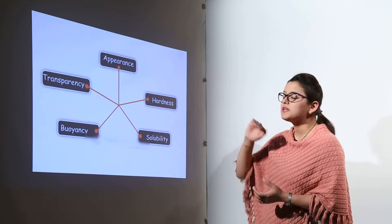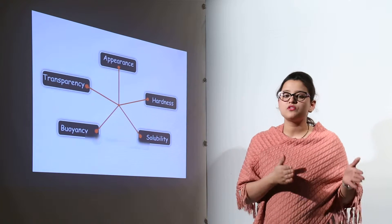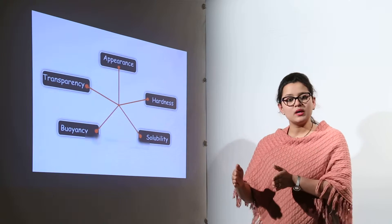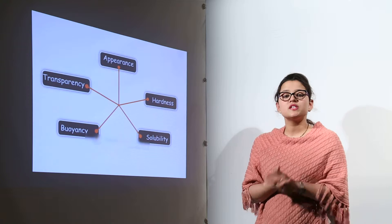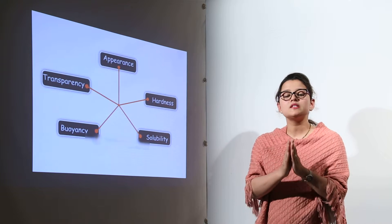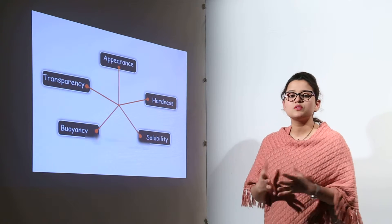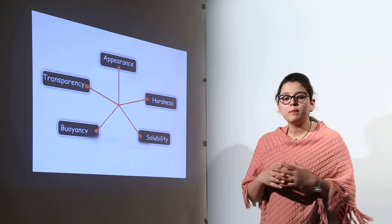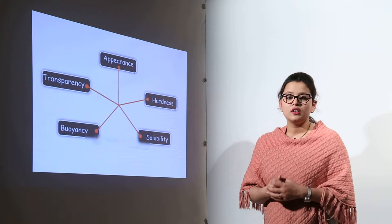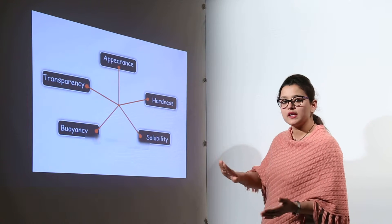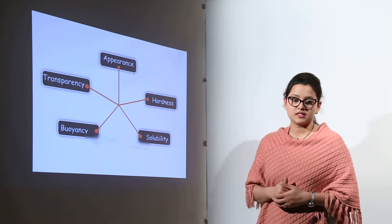The last property is transparency, which has three classifications. Transparent objects are objects through which we can completely see — for example, glass windows. Opaque objects are objects through which we cannot see at all — for example, this board, through which I cannot see anything. So substances through which we cannot see are called opaque substances.